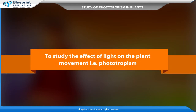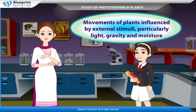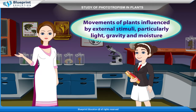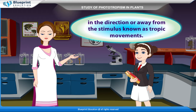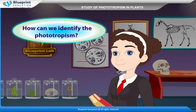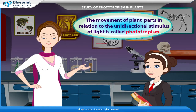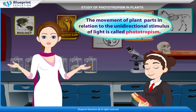To study the effect of light on plant movement, i.e., phototropism — movements of plants influenced by external stimuli, particularly light, gravity, and moisture, in the direction or away from the stimulus, known as tropic movements. The movement of plant parts in relation to the unidirectional stimulus of light is called phototropism.